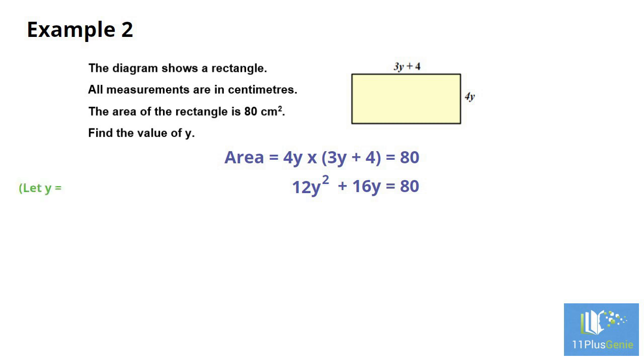Let us choose y equals 3. Then y squared equals 3 squared which is 9 and 9 times 12 is 108 and that is too big. So y must be smaller than 3.